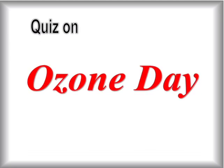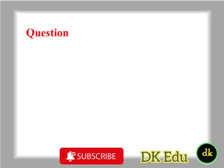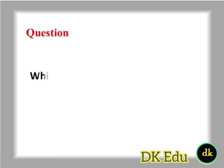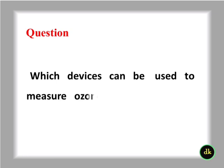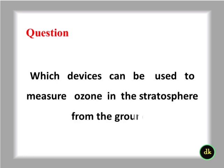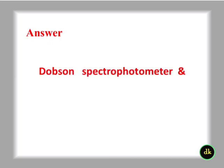Which devices can be used to measure ozone in the stratosphere from the ground? Dobson spectrophotometer and light detection and ranging (LIDAR).